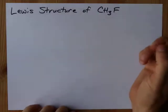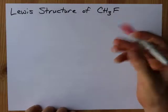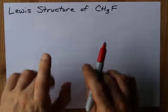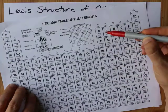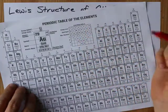Lewis structure of methyl fluoride or fluoromethane - I don't care what you call it, I care that you can draw it. You're gonna need to know how many valence electrons each atom brings. Carbon, group 14, brings four valence electrons.